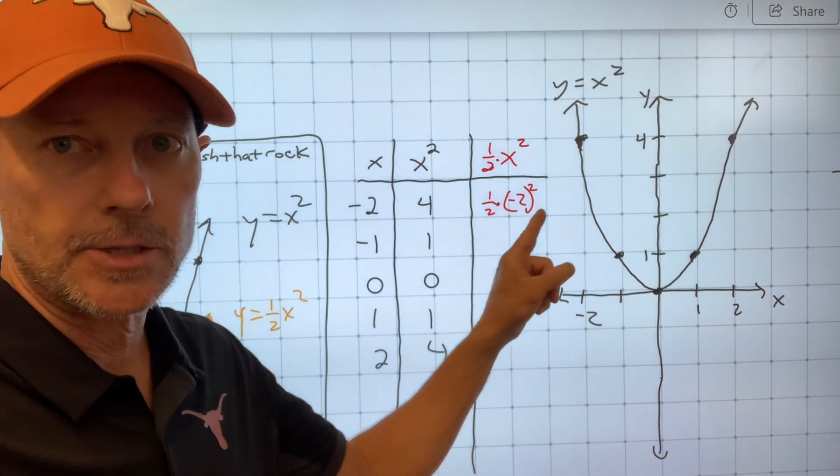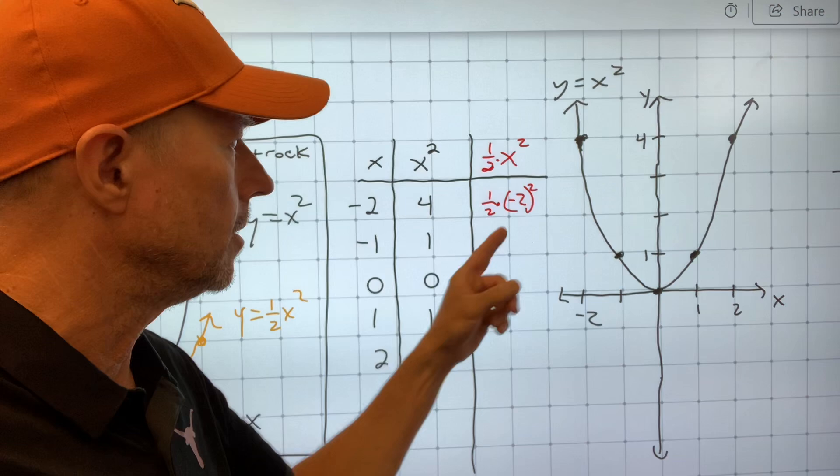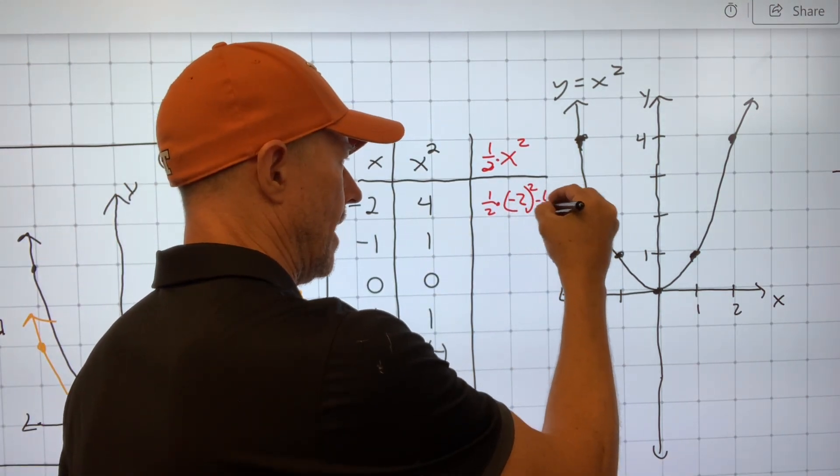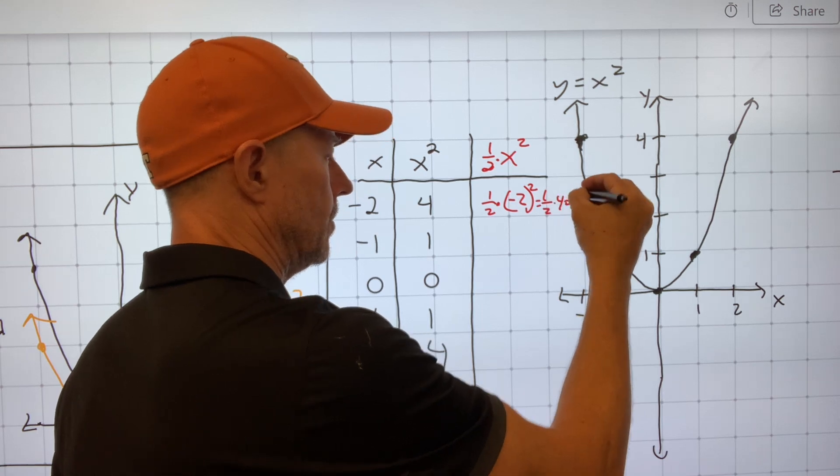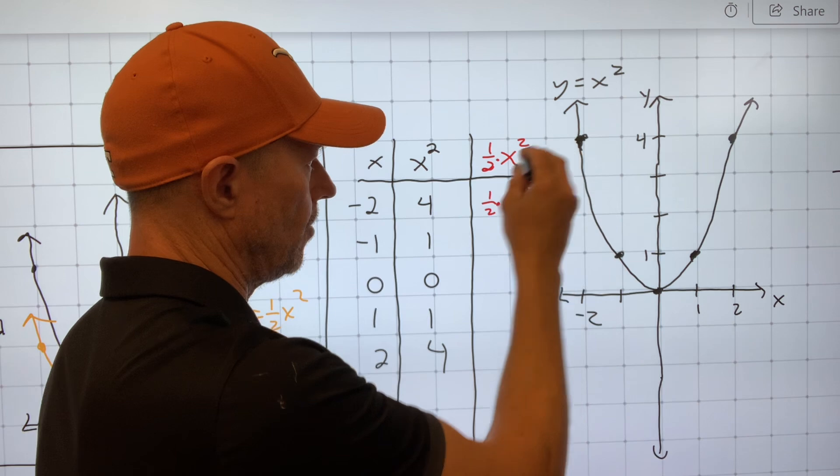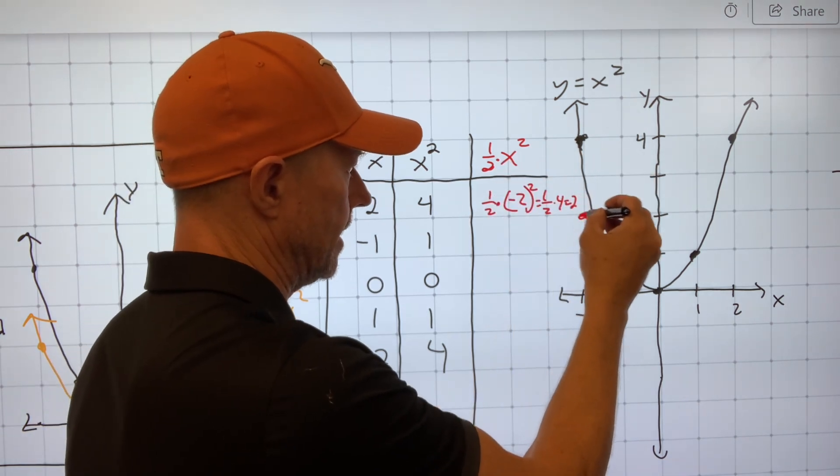Well, you do exponents before you multiply, so this negative 2 becomes 4, so I get negative 2 times negative 2 is a positive 4, so I have a half times 4, which is 2. So this point is no longer, when I put in negative 2, it's no longer at 4 on this graph, it's at 2 instead.